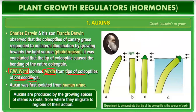Auxin was first isolated — not from the oat plant, but from something you would not expect: human urine. Auxin was isolated from human urine. Auxins are produced by the growing tips of the stem and the root, from where they migrate to the regions of their action.